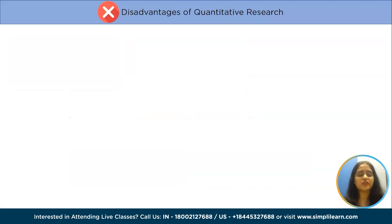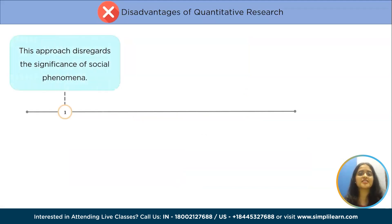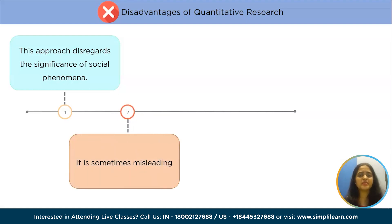Now let's concentrate on the disadvantages of quantitative research. This approach disregards the significance of social phenomena. A specific hypothesis can be proved or refuted using the quantitative approach, but it is unconcerned with the reasons behind why people express their opinions or make decisions. Sometimes it can also be misleading — many individuals believe that quantitative research is more trustworthy or scientific than observational qualitative research since it is based on numbers, but both qualitative and quantitative research have the potential to be biased.